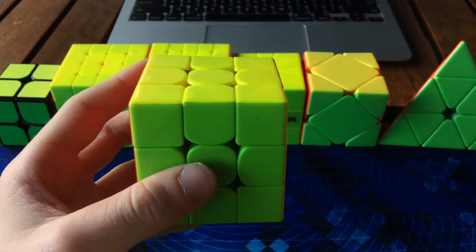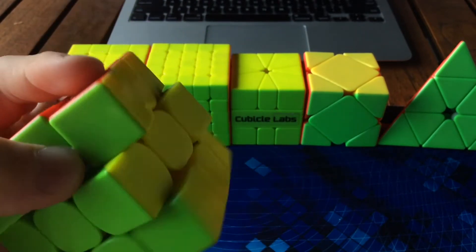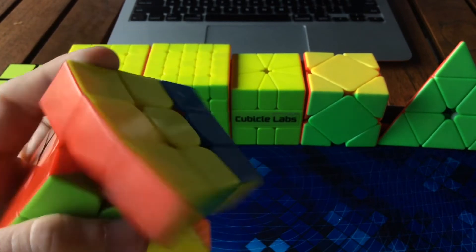For one-handed, I'm gonna be using the Cubicle Labs Valk M. My goal is to just get a sub 35 average and a sub 33 single would be great.